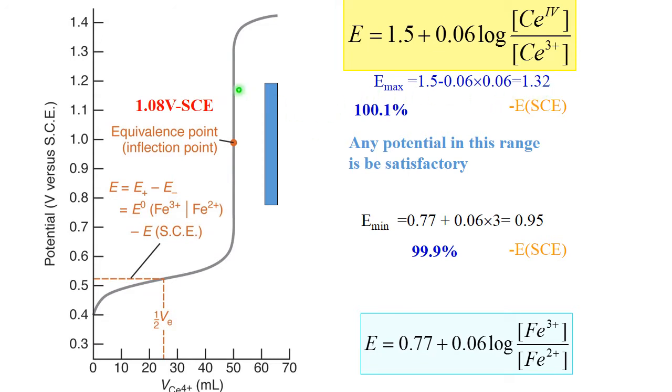So, if we'll stop at 1.32, at 1.08 or at 0.95, we'll still have very small error, undetectable error of titration. Beyond that point, the second Nernst equation takes care. And redox potential will rise to 1.5. Again, minus SCE, so 1.3 something.